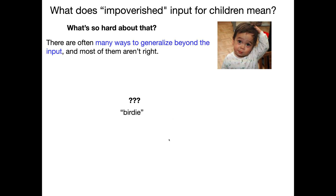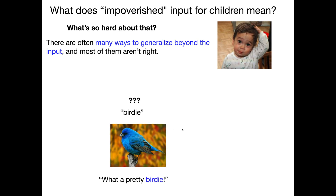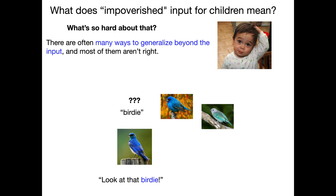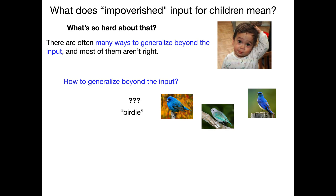Let's take a really simple example in the realm of vocabulary acquisition. Here's a child register word: birdie. We as adults hopefully know what birdie is, but a child doesn't — they have to learn what a birdie is if they're an English-speaking child. So someone might say, 'Look, what a pretty birdie,' and point out a very nice bird. 'Look, a birdie!' — pointing out this very nice bird. 'Look at that birdie!' — pointing out that very nice bird. That's the data that you get. How are you going to generalize beyond the input?